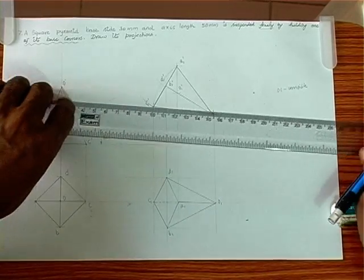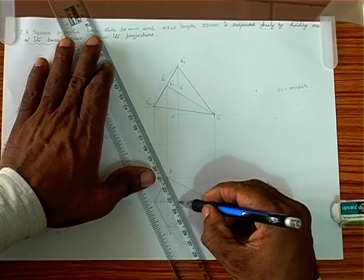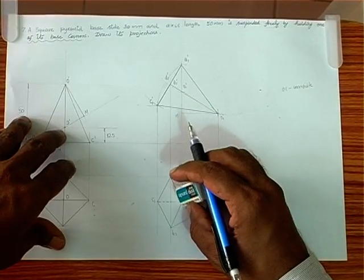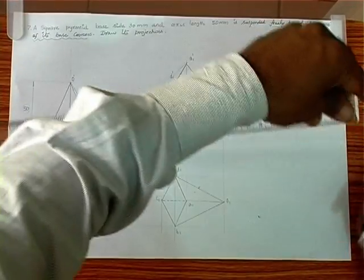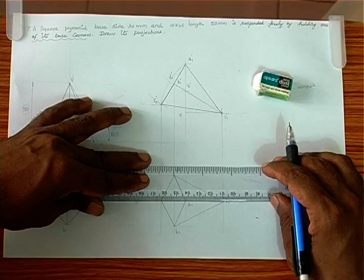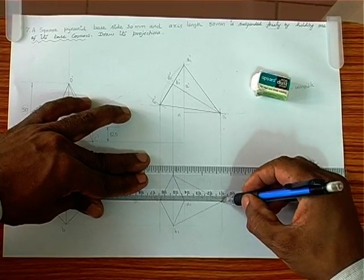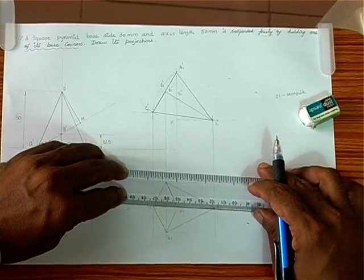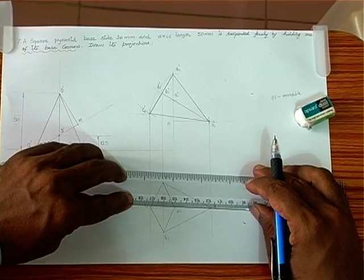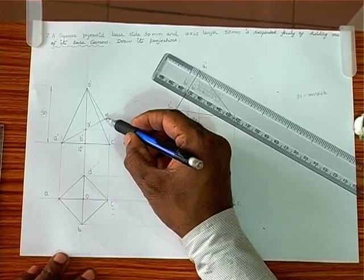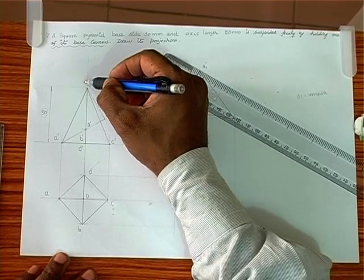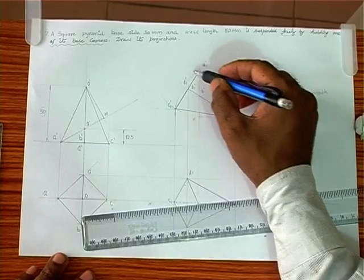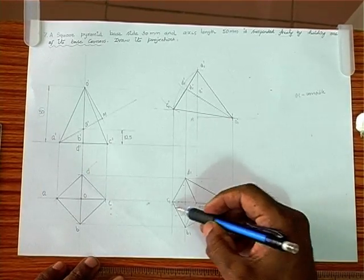The condition is that the solid should be resting on the ground in its corner position — the solid should be held in corner position. We check the corner position and draw the square pyramid for corner position. Based on G', we extend the line and bring M, completing the full diagram.